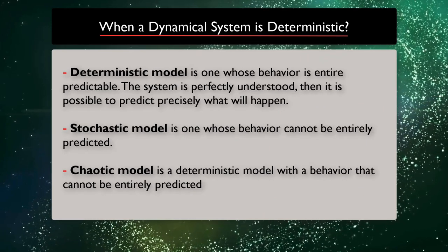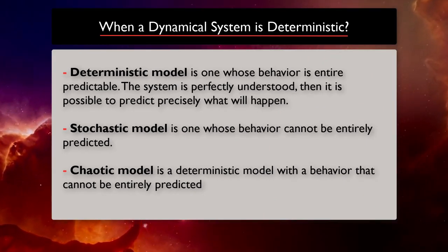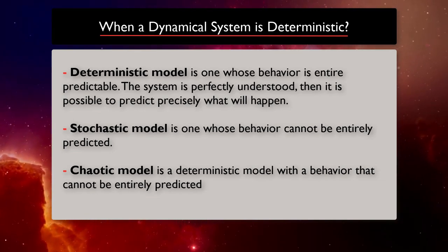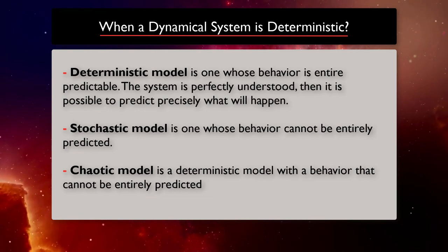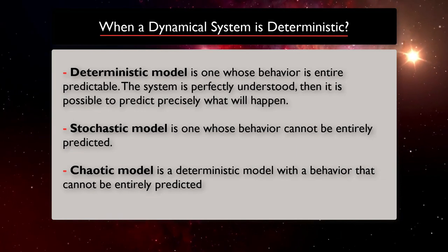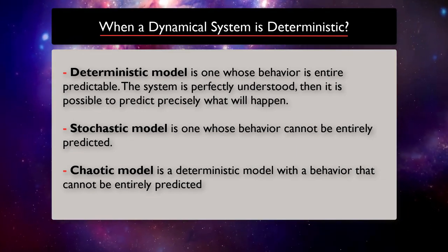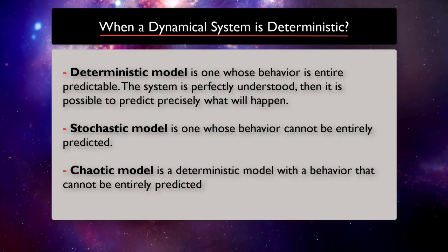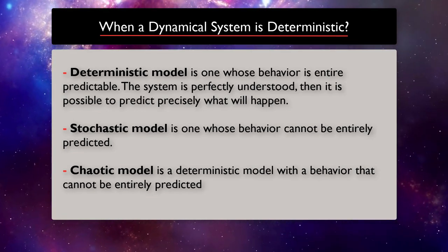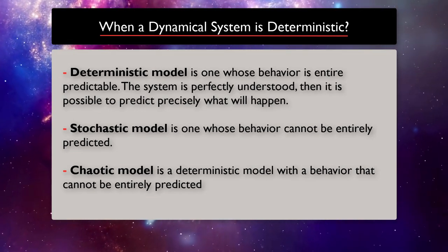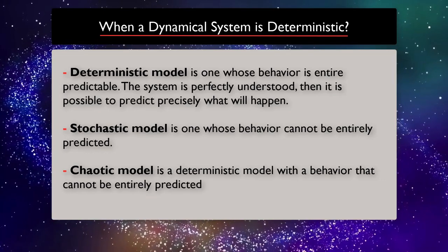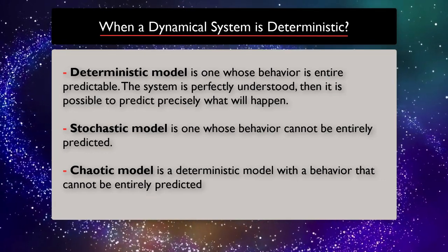The first class we will talk about is the deterministic dynamical system. As you can probably guess by name, the dynamical system is deterministic if the present state can be determined uniquely from the past states, which means no randomness is allowed. Stochastic models possess some inherent randomness. And a chaotic model is a deterministic model with behavior that cannot be entirely predicted. They are predictable in the very short term, but appear random for longer periods.